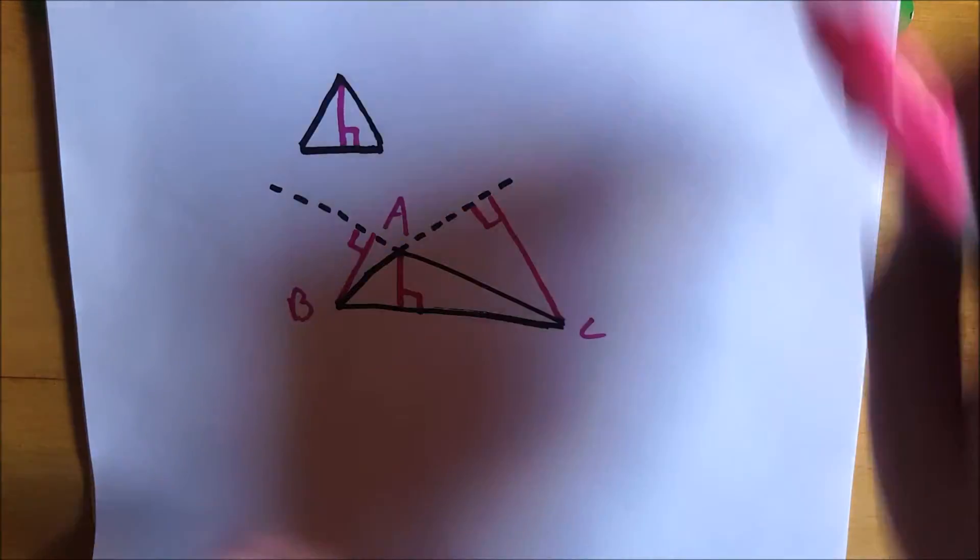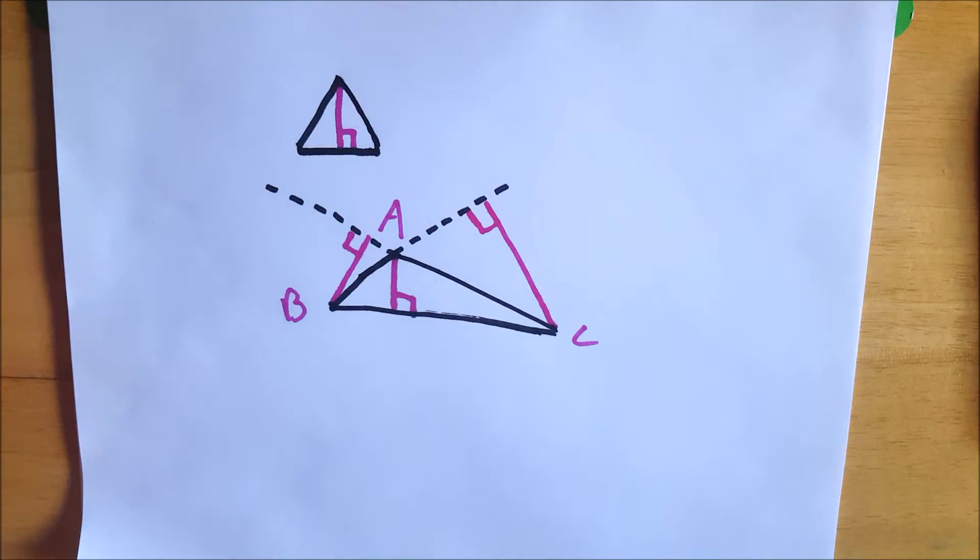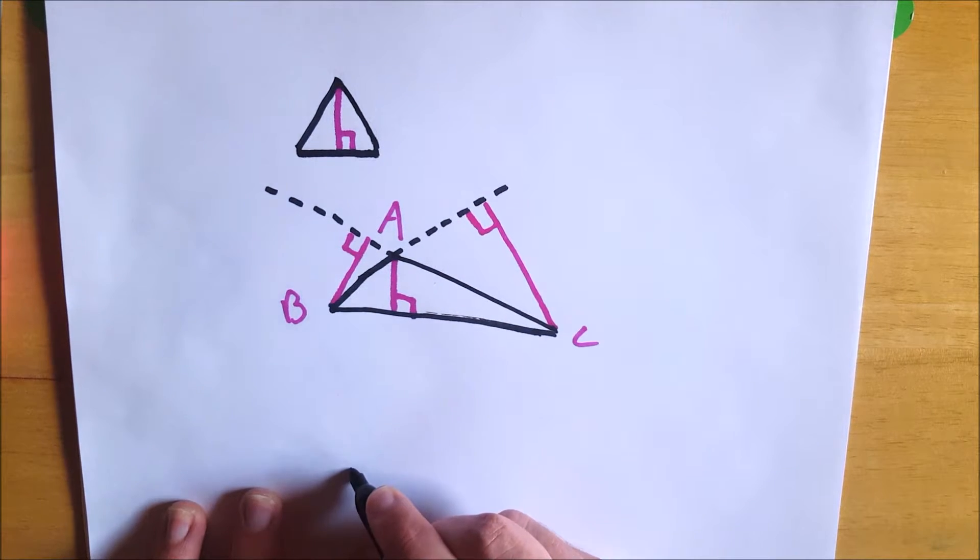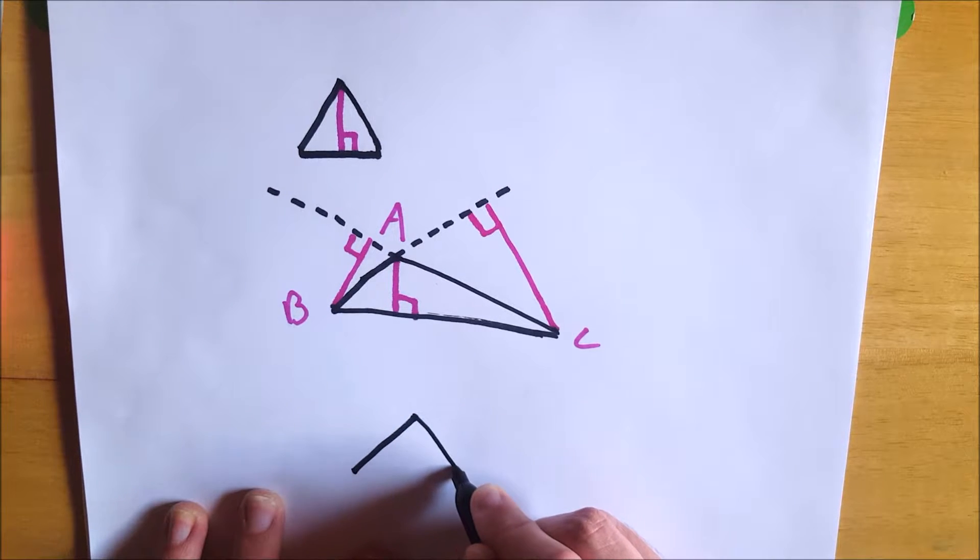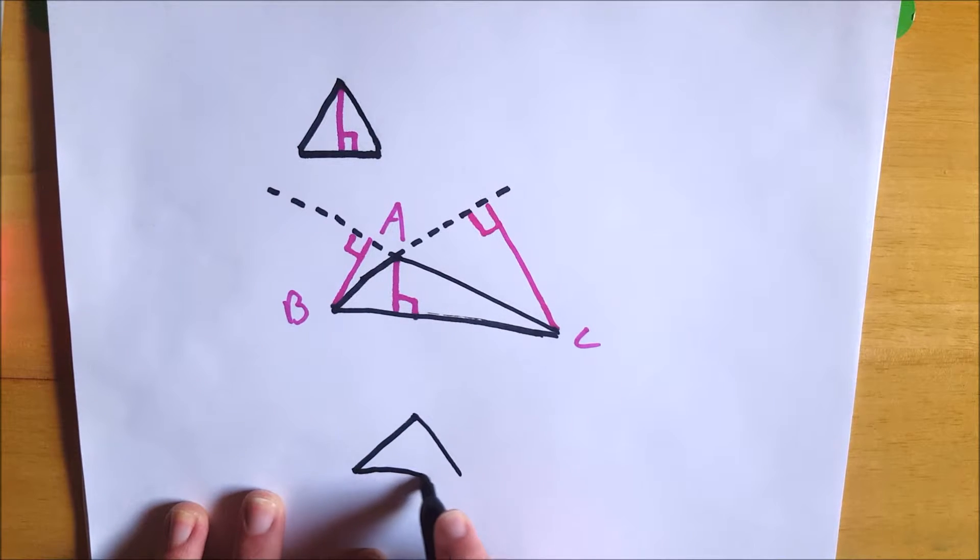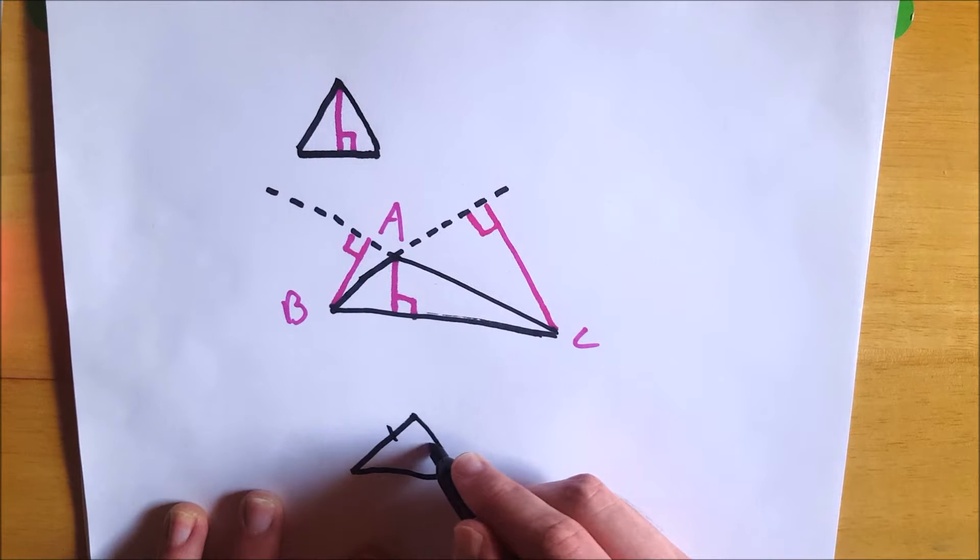And let's look at an isosceles triangle, because there's a couple things to mention there. And then we'll look at a right triangle real quick. So in an isosceles triangle, let's say that looks pretty isosceles. So this side's congruent to this side.